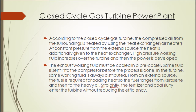Now let's look at the other type: the closed cycle gas turbine. In the closed cycle, the compressed air from the surrounding is heated by using a heat exchanger. At constant pressure from the external source, heat is additionally supplied to the heat exchanger. High-pressure working fluid expands over the turbine and power is developed. The exhaust working fluid must be cooled in a cooler, and the same fluid is sent back into the compressor before the process repeats. The same working fluid is always circulated within the turbine.